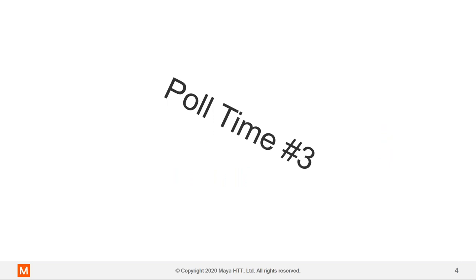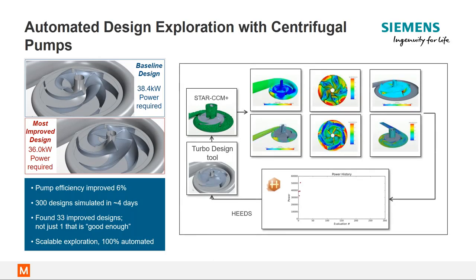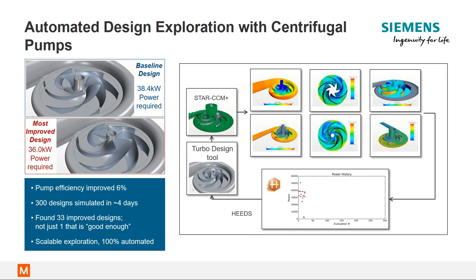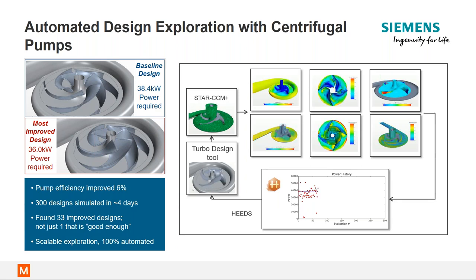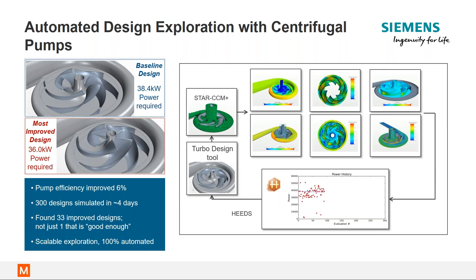By the end of this presentation, we aim to change everyone's perspective by introducing Star-CCM+, which provides a streamlined approach to optimization. In the centrifugal pump example, automated design exploration was used to discover the most optimum design — one requiring significantly less power, representing a 6% pump efficiency improvement. This improvement was obtained after the customer had already manually optimized the design and felt they had done a good enough job. The optimizer ran through 300 simulations comprising a few days on a 32-core cluster, and the entire design exploration was 100% automated.